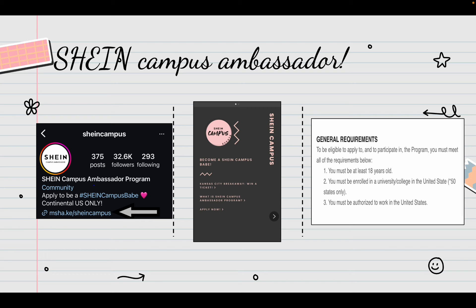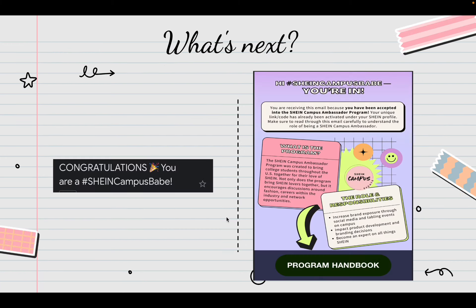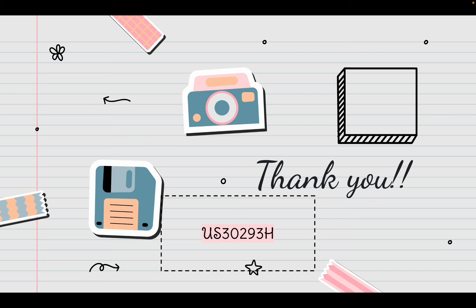You can become a Shein Campus Ambassador, which is what I am right now — that's how I have my own reference code. To become a Shein Campus Ambassador, go to the Shein Campus Instagram account and click the link there. It'll tell you more about Shein Campus, what they offer, and how you can apply. Once you hit that, those are the general requirements. You sign up, and if you get accepted, you'll get an email saying congratulations, you're a Shein Campus babe. You'll get your own reference code and can start sharing it with friends and family — everyone saves money, and it's a win-win.